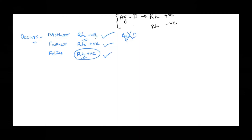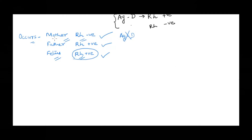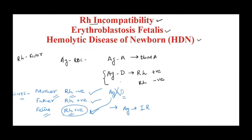Since the mother is RH negative, she does not have antigen D. When her immune system comes in contact with the RH positive RBC of the fetus, it is going to recognize this as a foreign antigen and mount an immune response against it to clear it up. However, this condition is not going to occur during the first delivery.